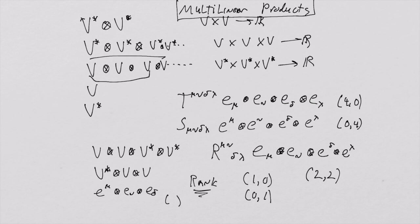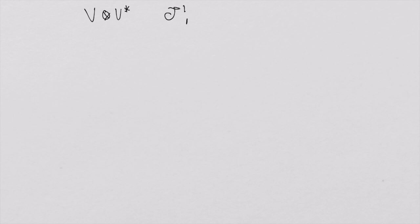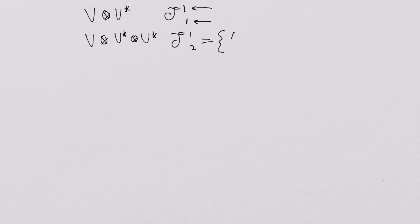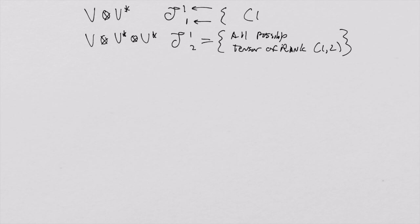Let's talk about how they operate as maps right now. I'll take as an example the tensor product space V tensor V*, written as T^1_1. That's because the rank is the vectors and covectors. For example, V tensor V* tensor V* would be T^1_2. T^1_2 represents the set of all possible tensors of rank (1,2), and T^1_1 represents the set of all possible tensors of rank (1,1). That's a quick way of writing these spaces using rank as a concept.